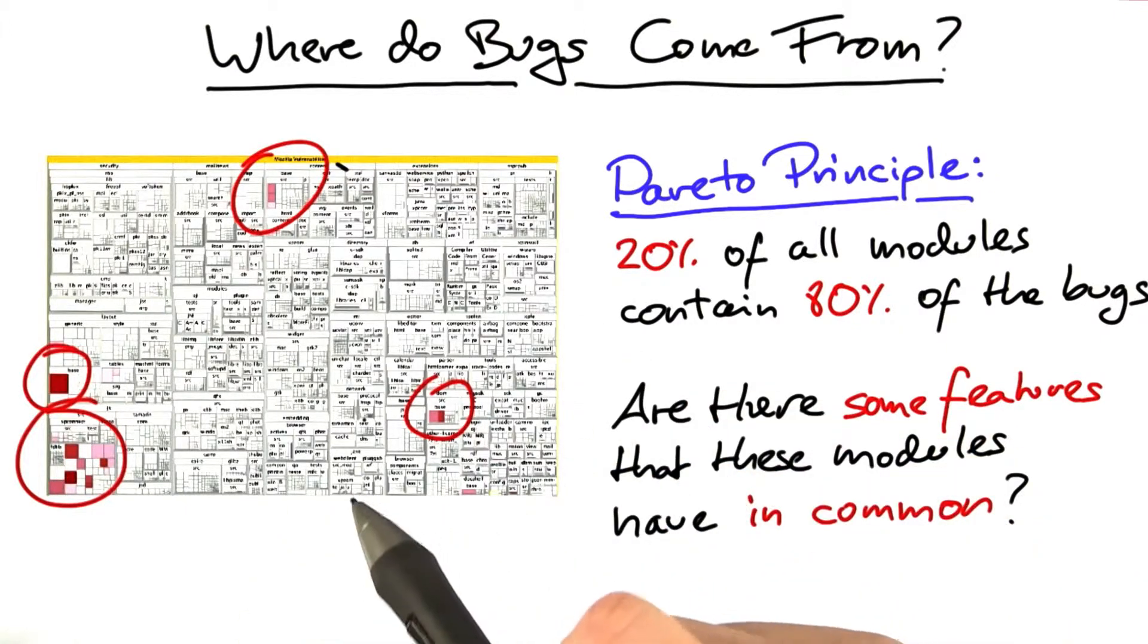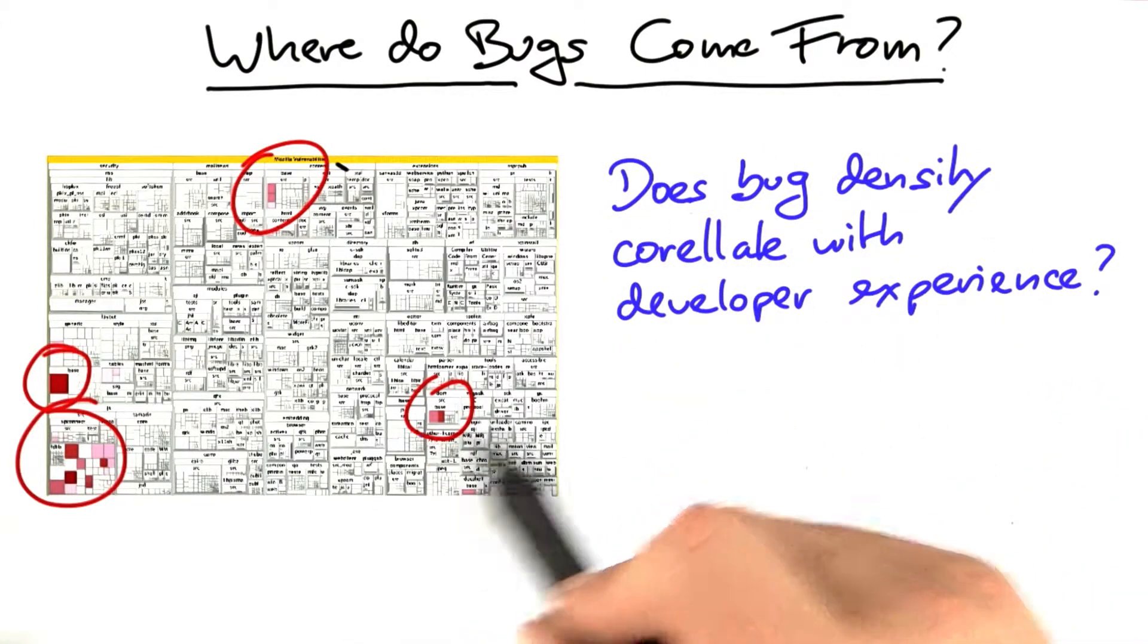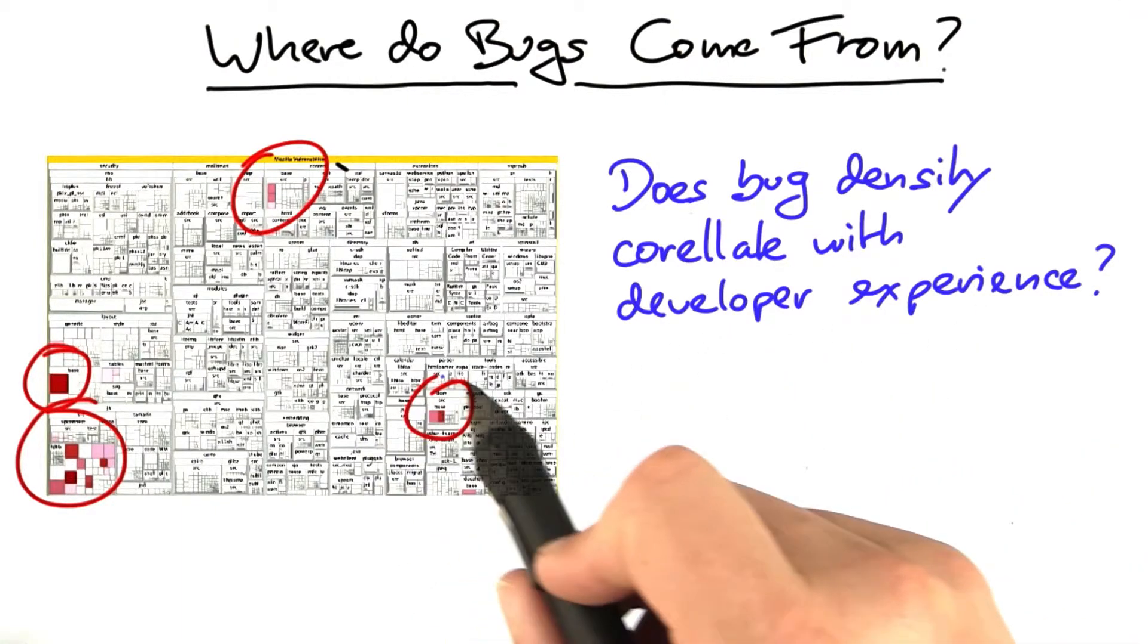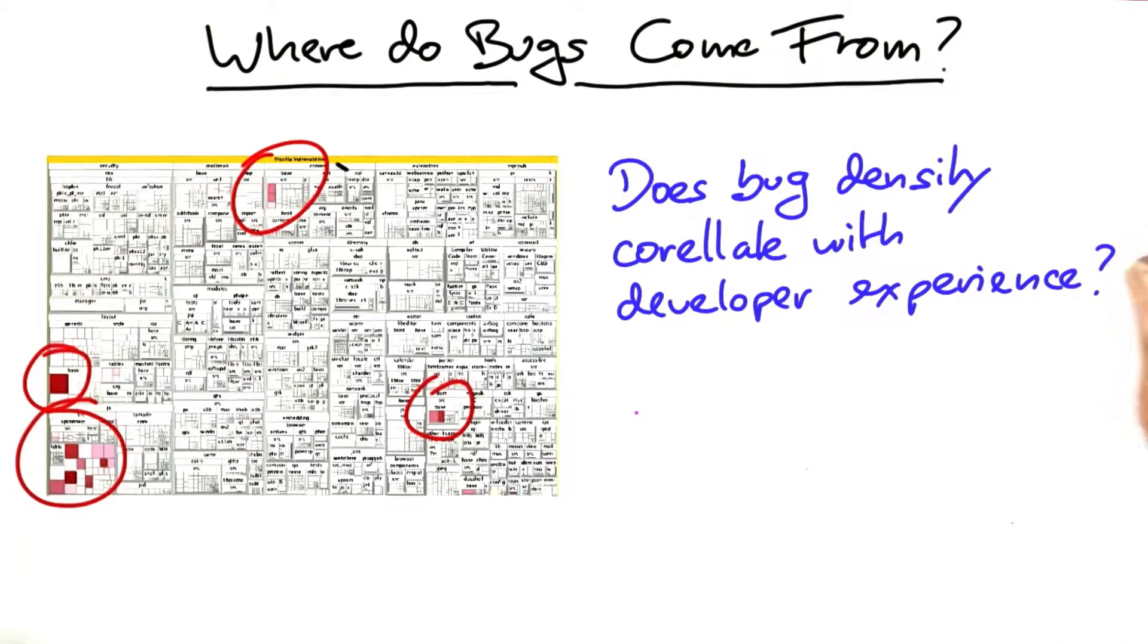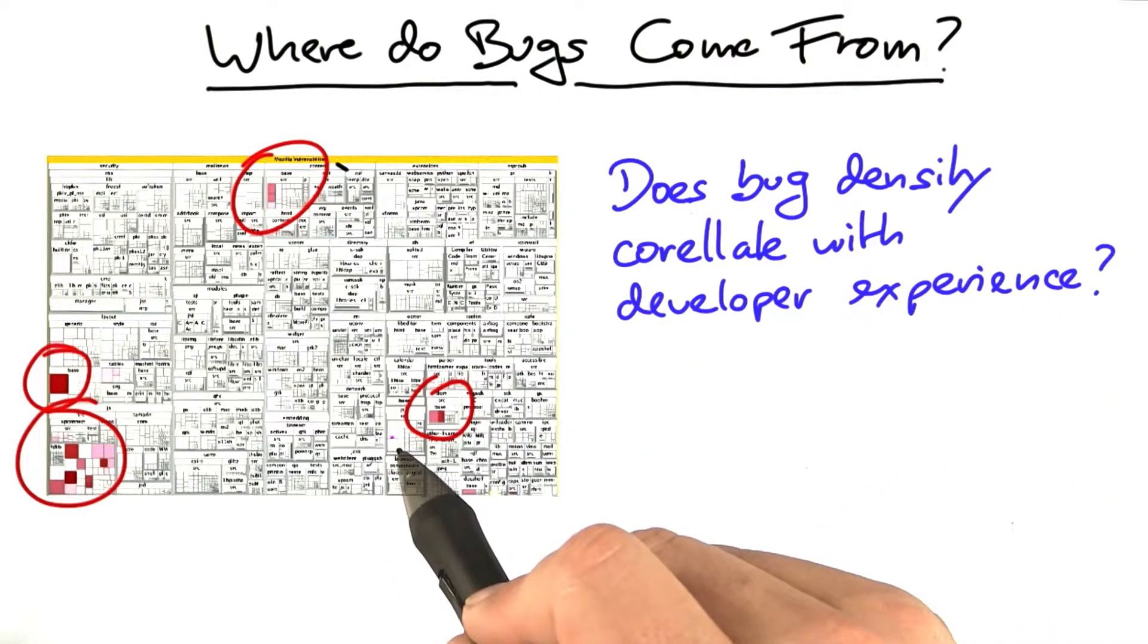So we dug a bit deeper and checked a number of interesting features. The first question we asked, does the bug density correlate with the experience of the developers that wrote the programs? That is, possibly more experienced developers make fewer mistakes.